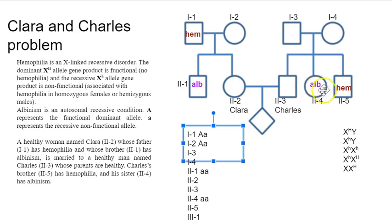By the same logic, Charles's parents also have to both be carriers in order for Charles's sister to have albinism. So 1-3 and 1-4 are also carriers. They don't have albinism, but they're transmitting that allele.